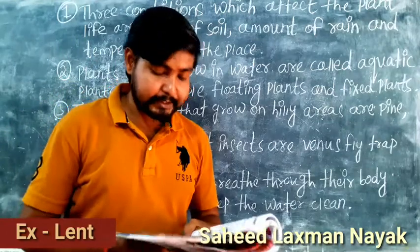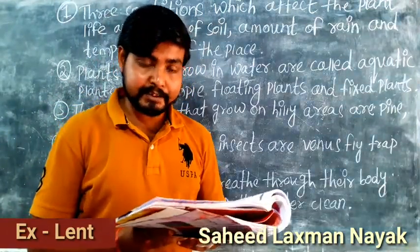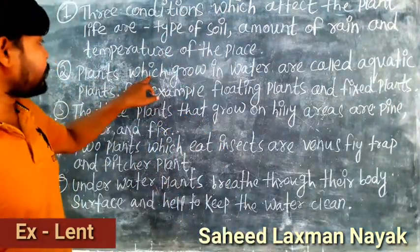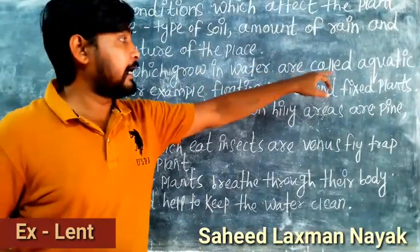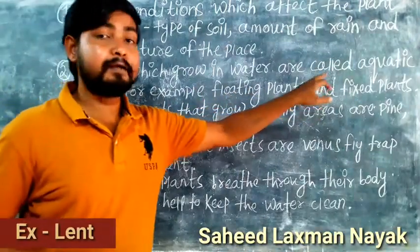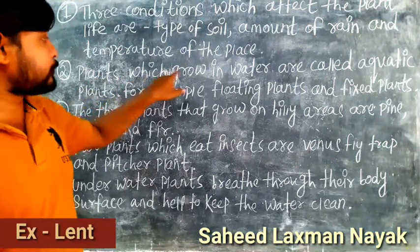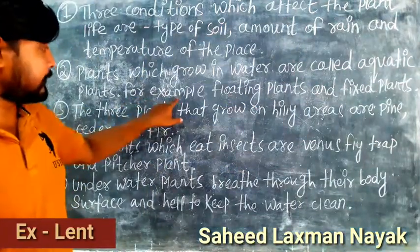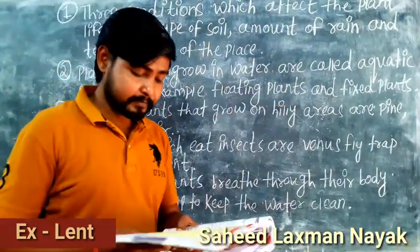Second question: what are aquatic plants? Give two examples. The answer is: plants which grow in water are called aquatic plants. For example, floating plants and fish plants.